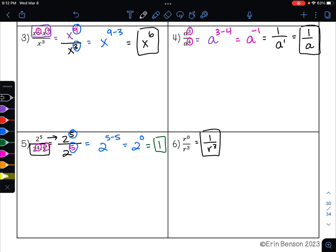The other way you could think about it is you could say, okay, I'm going to keep my base of r, and I'm going to subtract my exponents. 0 minus 3 is negative 3. I can't have a negative exponent, I need to make that negative exponent positive. So either way, you would get 1 over r cubed.